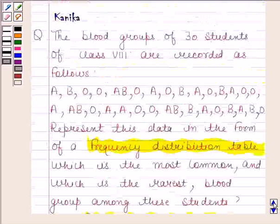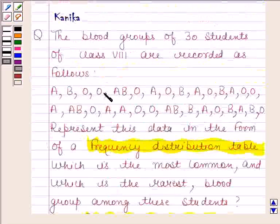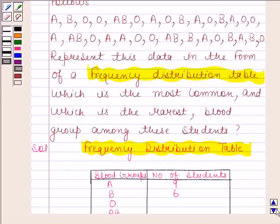Now we will calculate how many students have O blood group. 1, 2, 3, 4, 5, 6, 7, 8, 9, 10, 11, 12. So write 12 here.